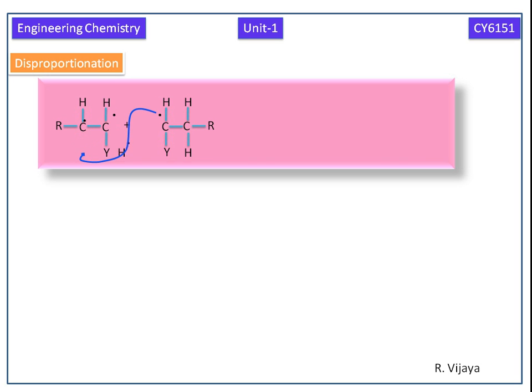This hydrogen radical will go to the end of the growing polymer and forms here. Now we have the saturated macromolecule. These two carbon radicals combine to give the alkene bond, that is unsaturated bond. Now we have the saturated and unsaturated macromolecules produced by disproportionation termination.